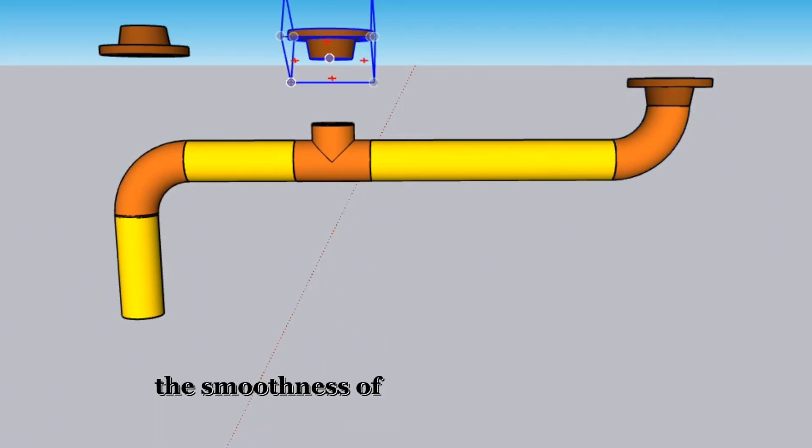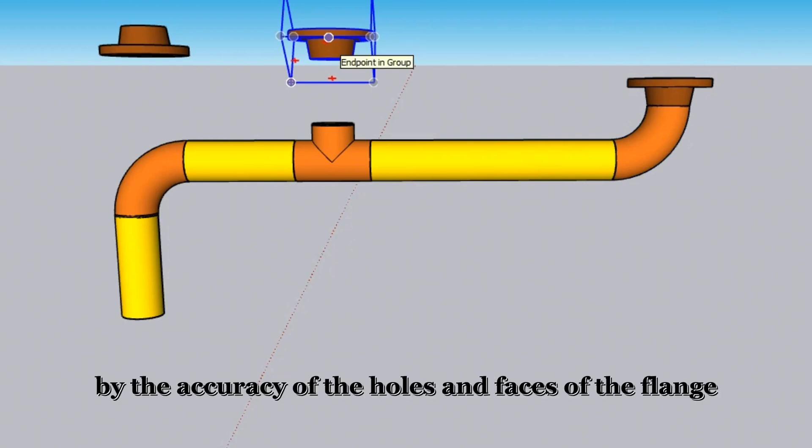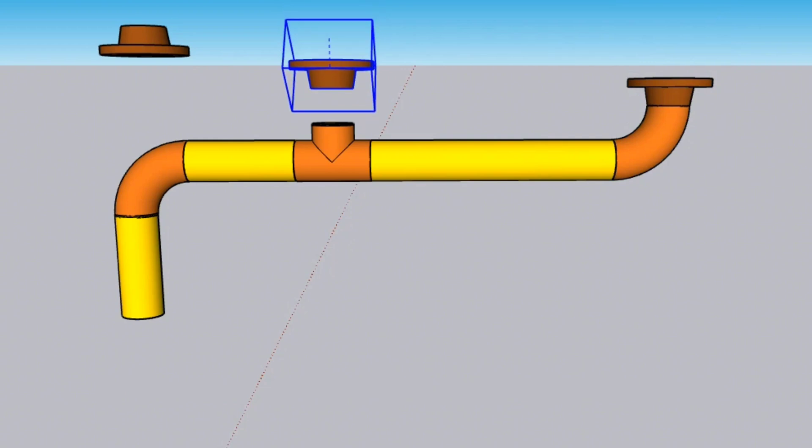The smoothness of pipelines is measured by the accuracy of the holes and faces of the flanges in the entire pipeline. Accordingly, we keep the installing of the flanges to the end of the fabrication process.